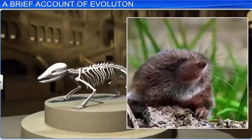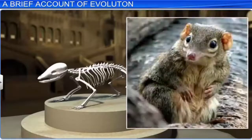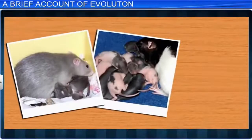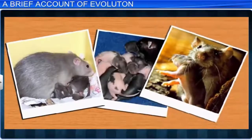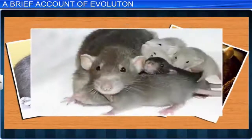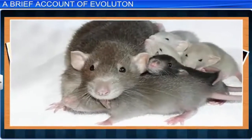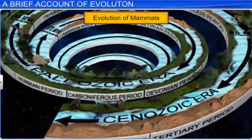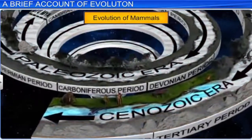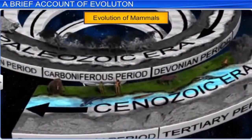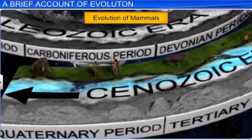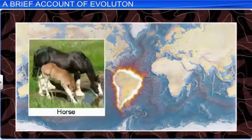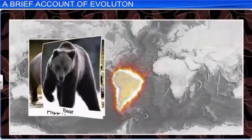Fossil evidence shows that the first mammals were like shrews. Mammals are characterized by viviparity — that is, they give birth to young ones, have mammary glands, and the unborn young are protected inside the mother's body. The evolution of mammals was a slow process that spanned across 70 million years. Mammals were more intelligent in sensing and avoiding danger. In South America, there were mammals resembling the present-day horse, hippopotamus, bear, and rabbit.